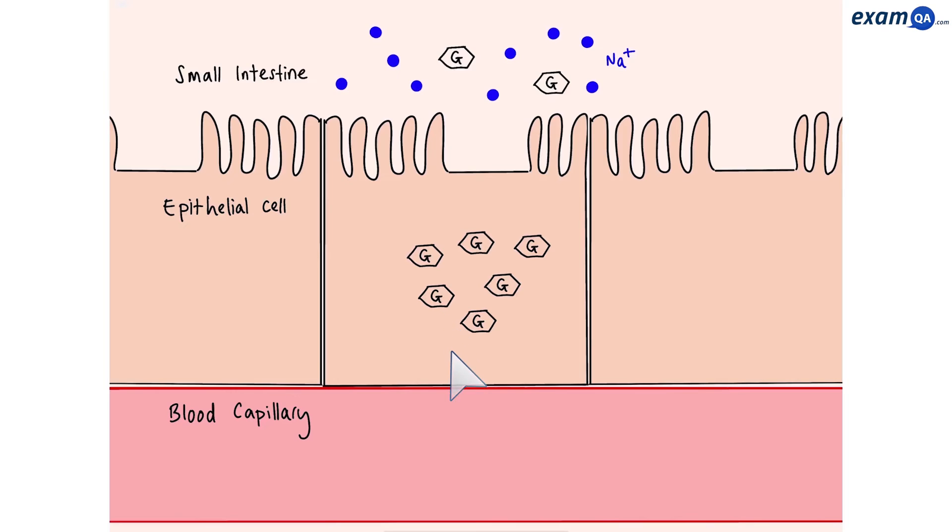The epithelial cell also has a large store of glucose molecules. Our goal is to get glucose into the blood. We can see that there's a high concentration of glucose in the epithelial cell and a low concentration in the small intestine. That means glucose has to move into the epithelial cell by some sort of active transport.